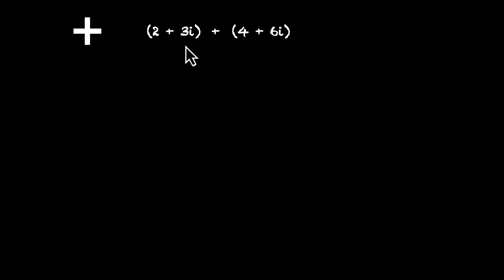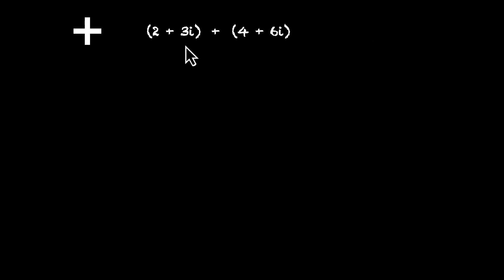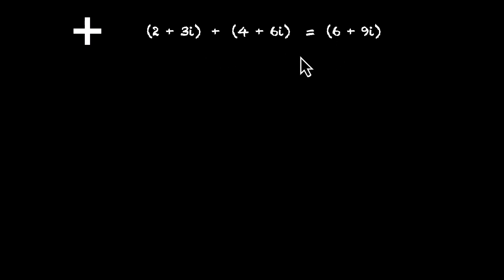Let's start with addition — a quick recap of how we add complex numbers. If we have two of them, say 2+3i and 4+6i, their sum is 2+4 for the real parts, that's 6, and 3+6 for the imaginary parts, that's 9. So it's 6+9i. We add their real parts separately and their imaginary parts separately.